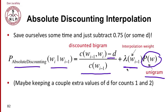So we have a discounted bigram probability mixed with some weight, which I'll talk later about how to set this weight, with a unigram. And maybe we might keep a couple extra values of d for counts one and two. Counts one and two we saw on the previous slide weren't quite subtracting 0.75, so we can model this more carefully by having separate counts for those.